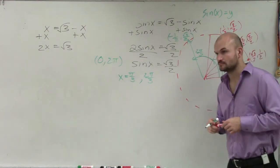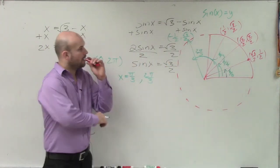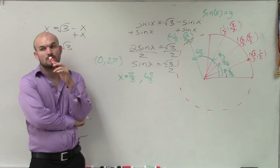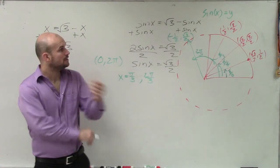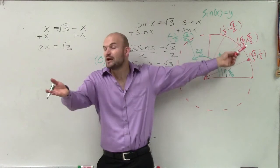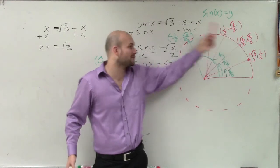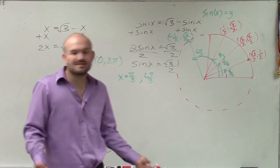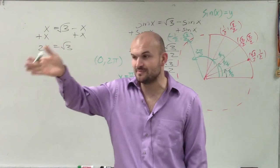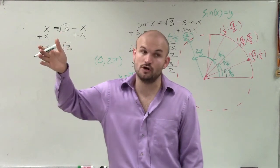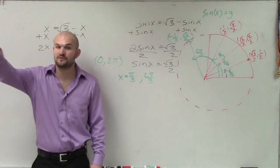A student asks about the negative 1 half. The instructor clarifies: last problem we did cosine, so it was cosine of 1 half — that's why we looked at those two values. Now we're doing sine, which is the y-coordinate, so it has to be just the y-coordinate. When sine is positive, the angles must be in the first and second quadrant. If cosine is positive, it has to be angles in the first and fourth quadrant. And if tangent is positive, it has to be in the first and third quadrant.